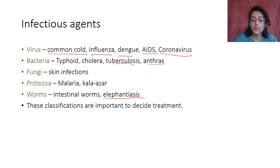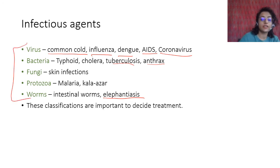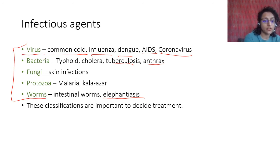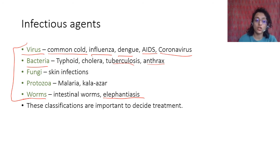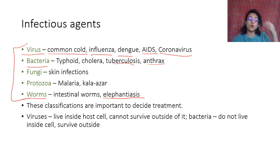These classifications are important to decide the treatment. How to treat a disease depends on what kind of infectious agent is present. Whatever works on worms will not work on a virus, will not work on bacteria. What works on a bacterium will not work on a fungus. All these things need to have different kinds of treatments.